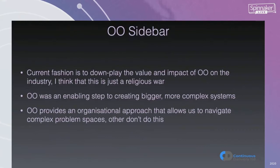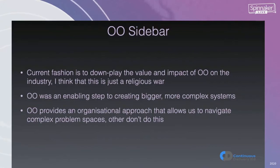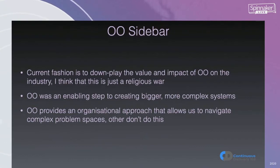I want to do a little sidebar. I'm an old-school OO practitioner, and it's currently fashionable to downplay the value and impact of object orientation on the industry. I've heard people say things like 'OO failed,' and I think that's just because they don't recognize what really happened. Object orientation was an enabling step in creating bigger, more complex systems. The reasons we have the operating systems we have and the approach to hiding information between parts of the system is largely down to object-oriented thinking. It gives us an organizational approach to navigate complex problem spaces that's lacking in other approaches. It has a place — I don't think it should replace any of the others, but I think it lives alongside them.